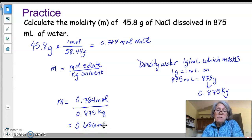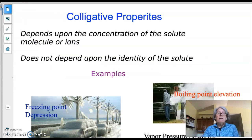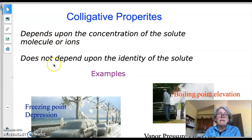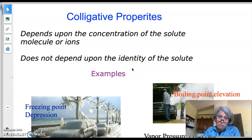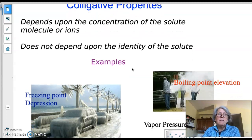This molality concentration is what we use when working with colligative properties. Colligative properties depend on the concentration of solute molecules or ions — they don't depend on the identity of the solute, only on the amount of solute present and, for ionic compounds, how many particles dissociate.